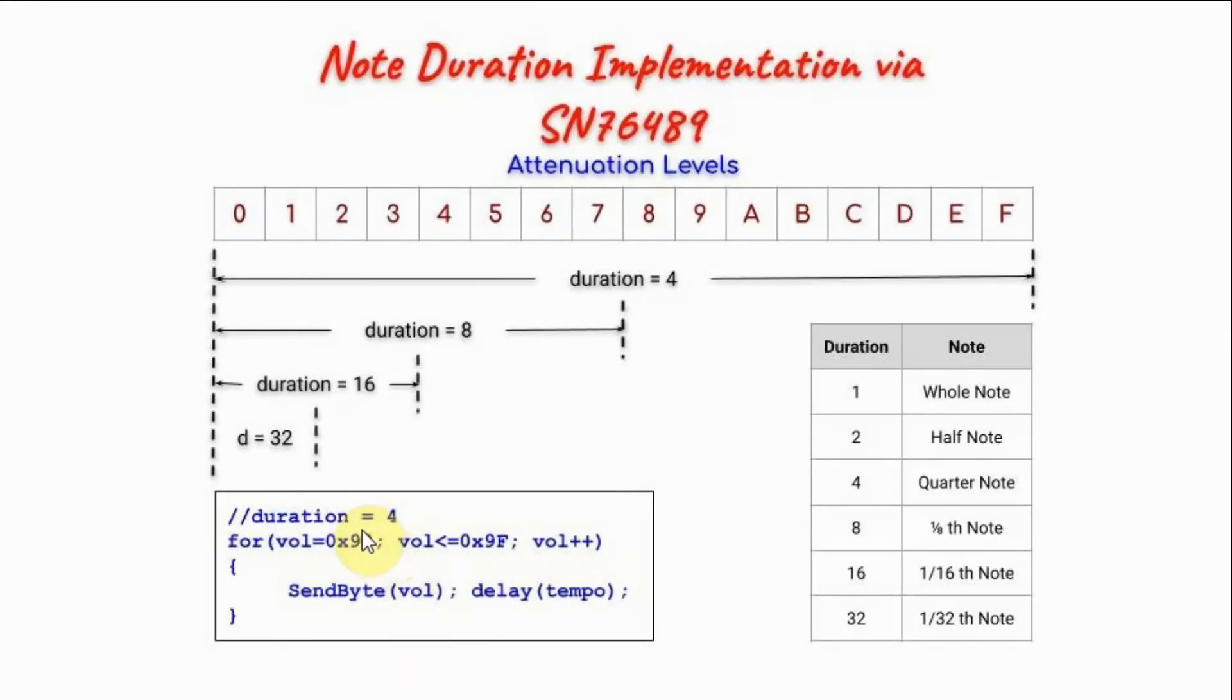The C++ code needed to implement duration is shown here. For example, for duration 4 we need a for loop that will loop 16 times to cover the 16 attenuation levels. If we want to implement duration 8, then we will loop 8 times, and so on.